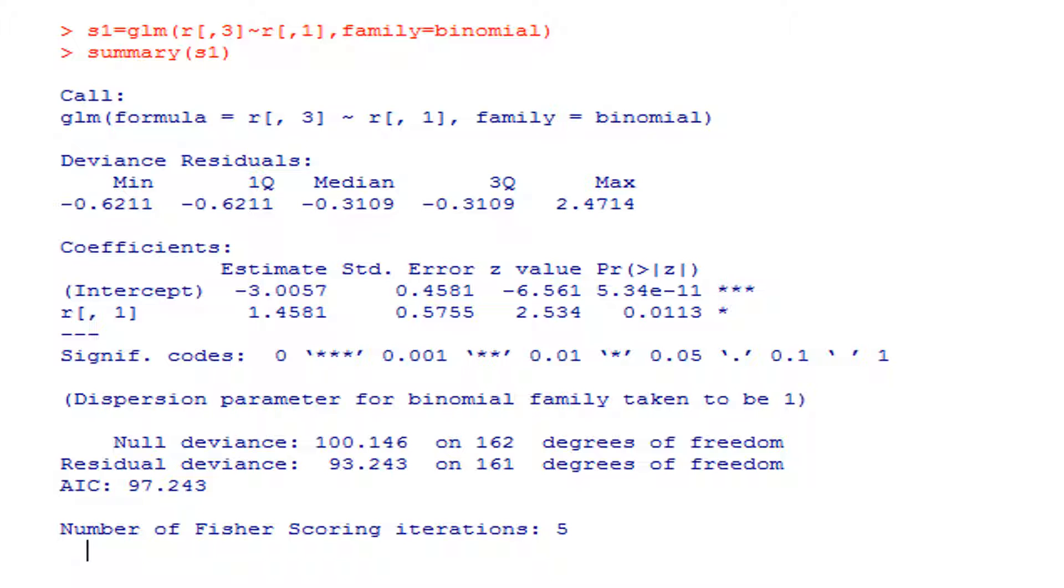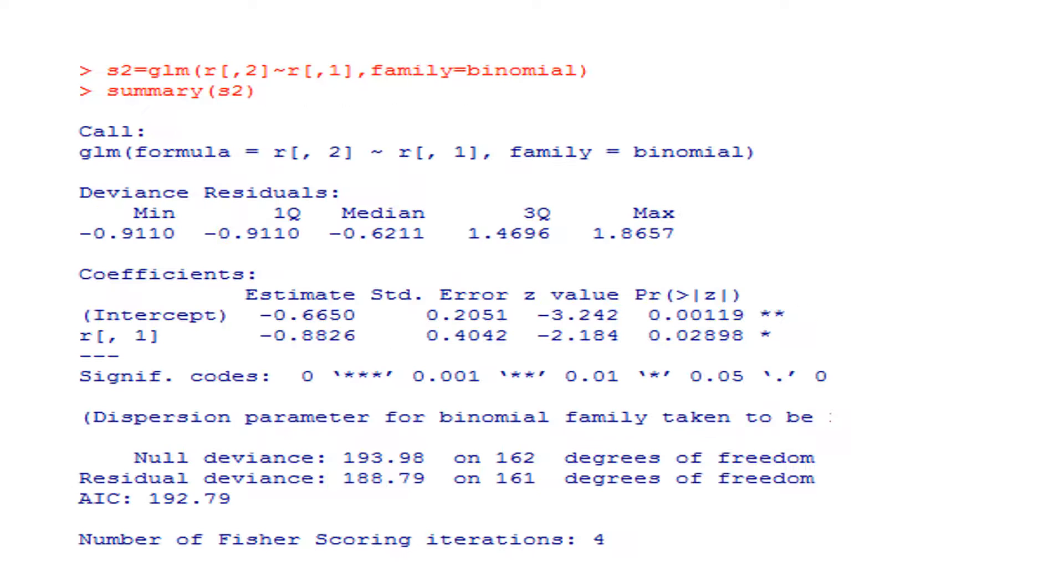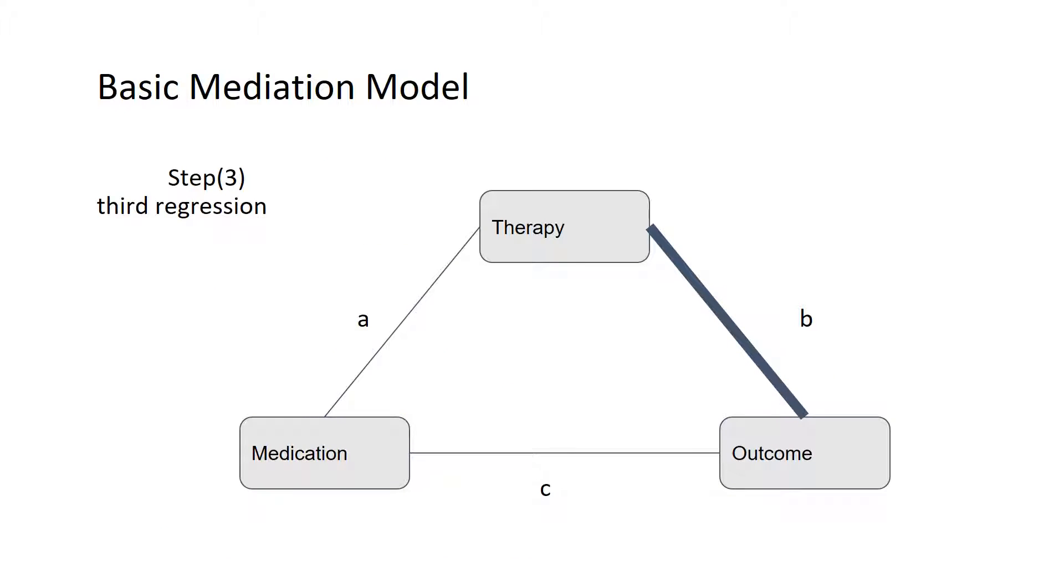Next, therapy on medication, so mediator on exposure. We regress or try to establish a relationship between mediator and exposure, and we put this formula and we found it is statistically significant with p-value 0.02989. So the second step is also established.